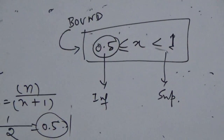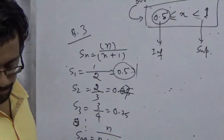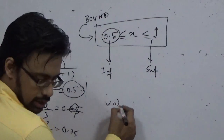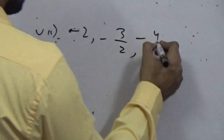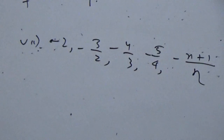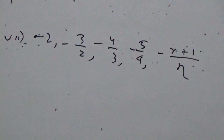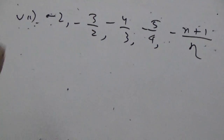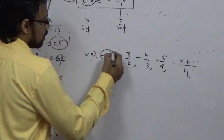The next question is a relatively different breed. A numerical sequence is provided: minus 2, minus 3 by 2, minus 4 by 3, minus 5 by 4, and the last term is minus (n plus 1) by n. We need to find whether Suprema and Infima exist for this pattern. These two patterns — the given sequence and the previous problem — are very much similar to each other. The first term is minus 2, so keep minus 2 as one extreme.